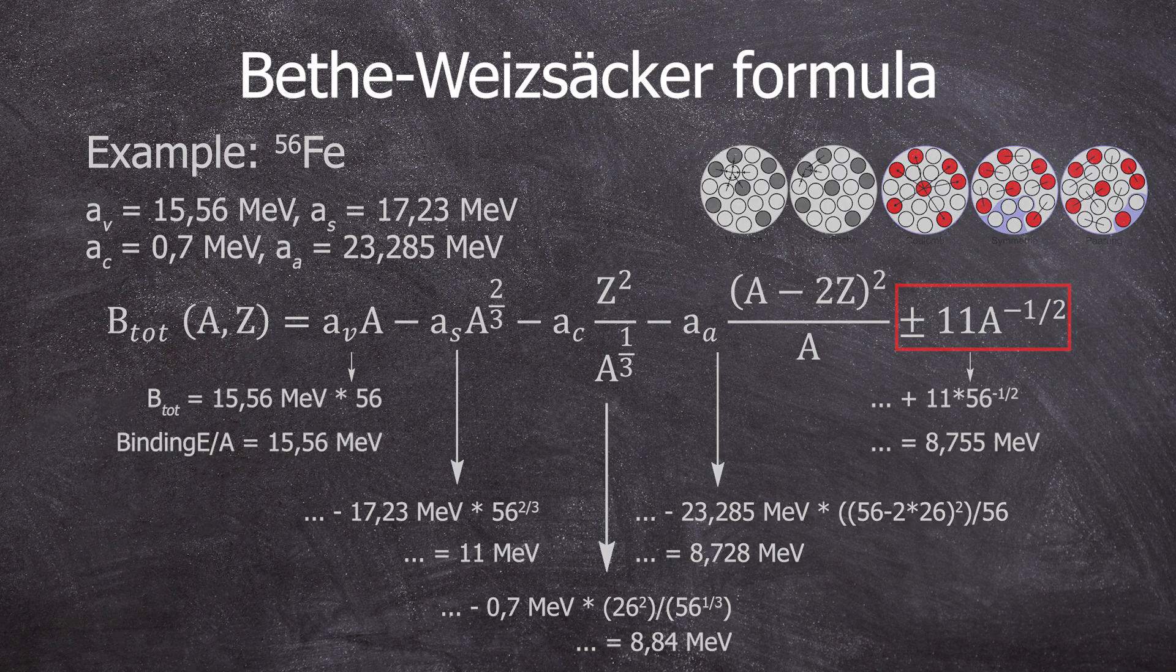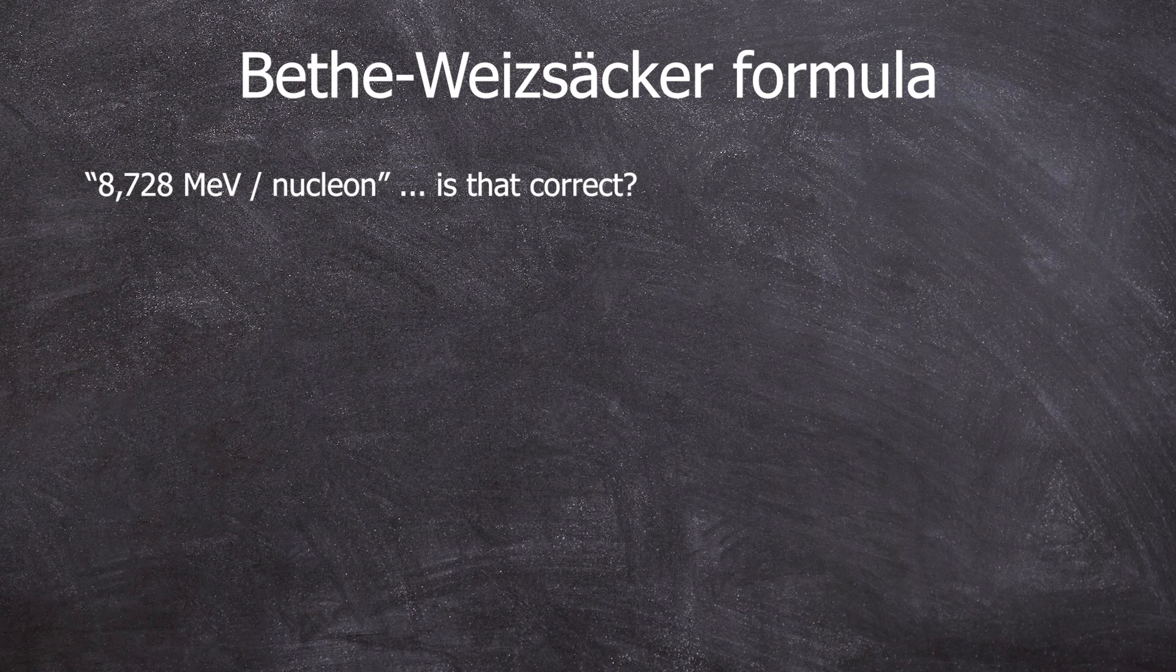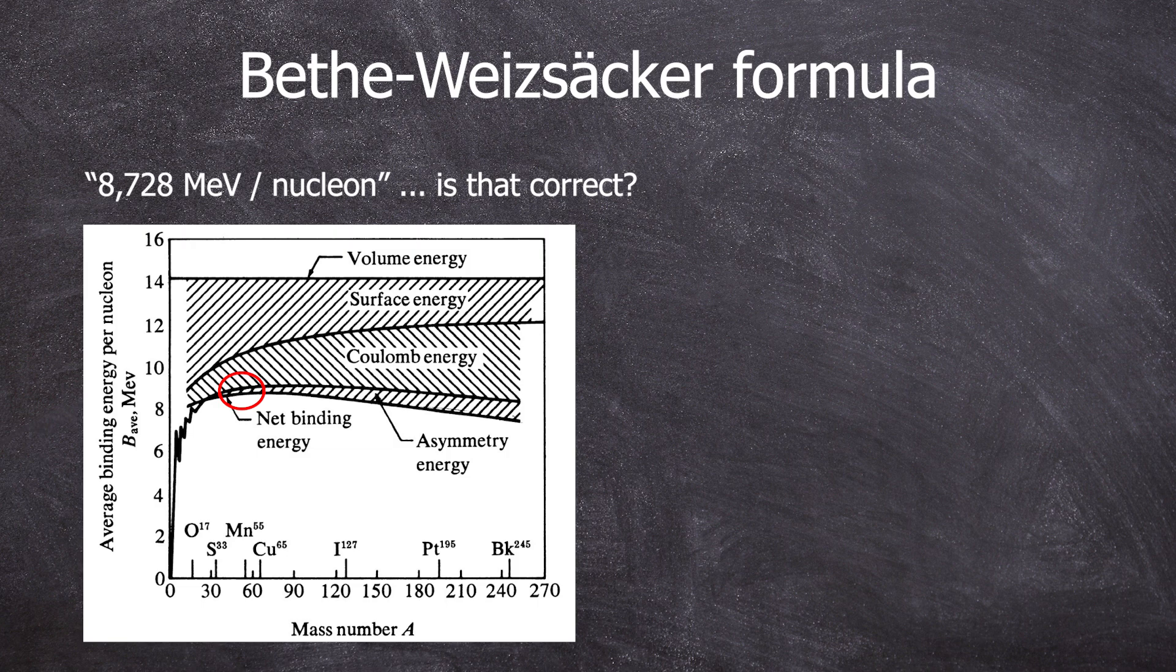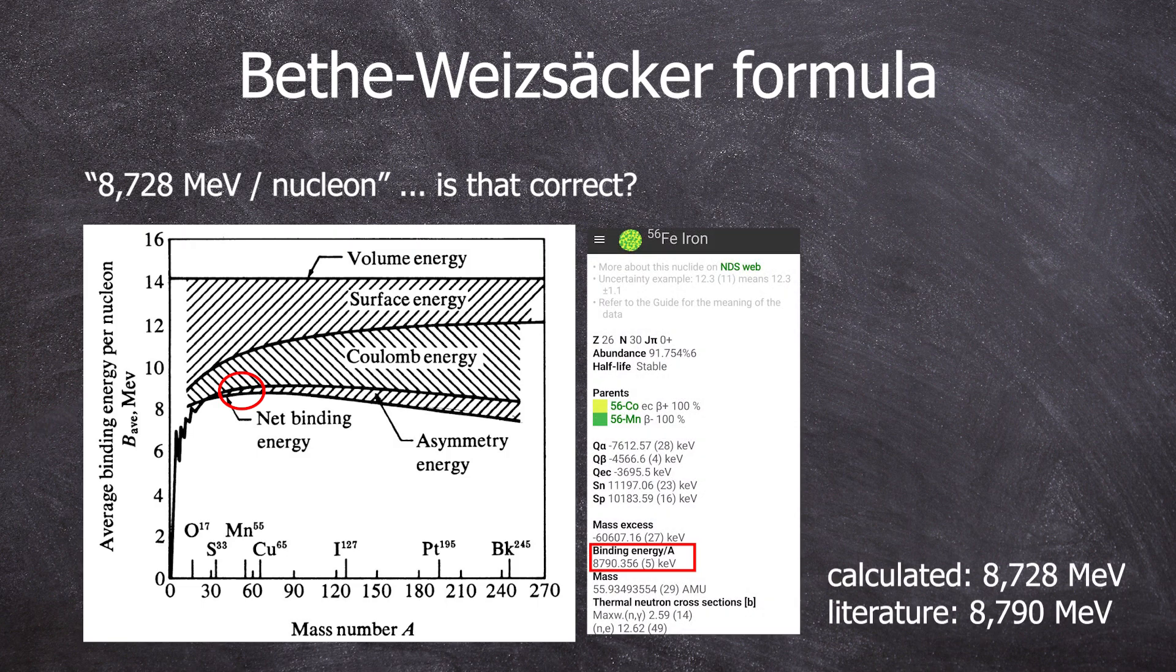How do we know that we have calculated correctly? Well, the image is already a good orientation aid, but of course we want to see the literature. And I will take the values from the isotope browser and we are really close to that. I hope I gave you a good insight into this equation and it doesn't look as overwhelming as it did at the beginning of the video.